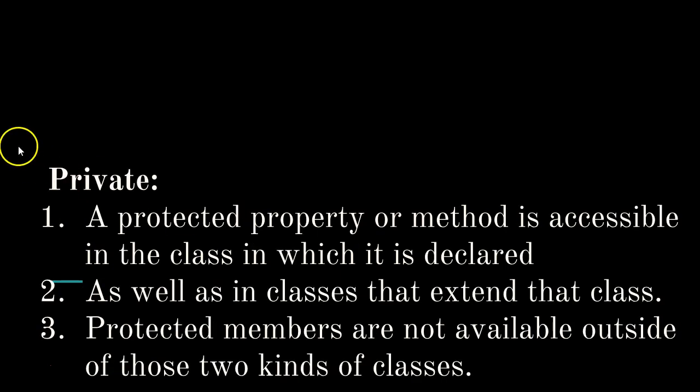Finally — and I made a mistake here, this is supposed to be protected — when you declare a variable as protected, a protected property or method is accessible in the class in which it is declared, and also accessible in a class that extends that class, but it is not accessible outside those two kinds of classes. So basically, if you want a property or method to be accessible from the class where you declared it and any other class that extends it, then you declare it as protected.